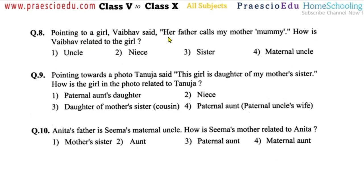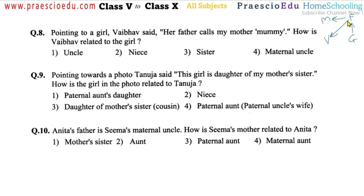Question number eight: pointing to a girl, Vebo said 'her father calls my mother mommy.' Vebo (V) is pointing at a girl (G). Her father calls Vebo's mother 'mommy,' meaning her father and Vebo are both children of the same mother — so they are siblings. How is Vebo related to the girl? Vebo is the uncle of that girl, so option number one is correct.